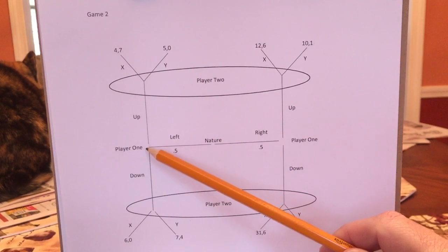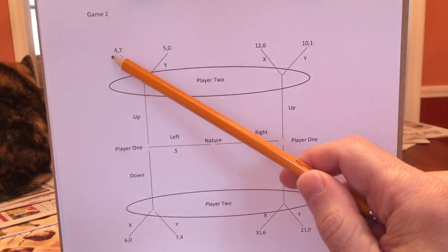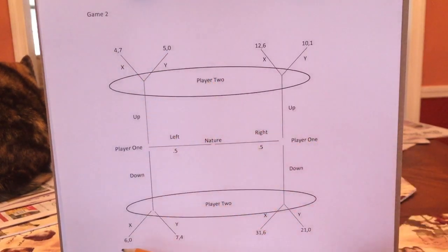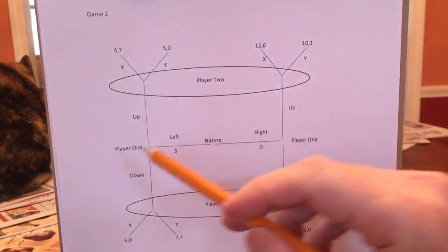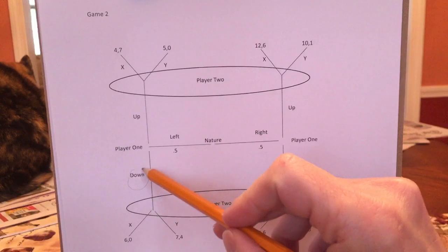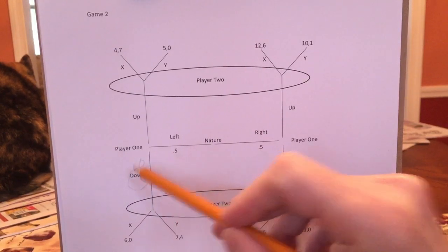Nature makes Player 1 a lefty. Player 1 will say up could give me four or five. Down will give me six or seven. Down's always going to be better. You're Player 1, you're told you're a lefty. Regardless of what Player 2 might do, you are better off going down. So down is a dominant strategy.